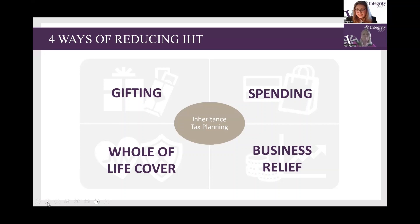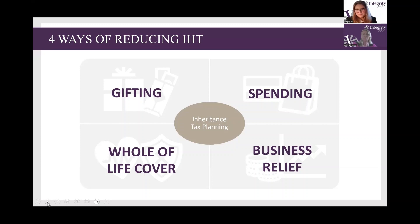Finally, the last option is something called whole of life cover. That's where you can get life cover for the rest of your life in order to have the money there to pay the inheritance tax bill. Those are our four main areas when it comes to inheritance tax planning.